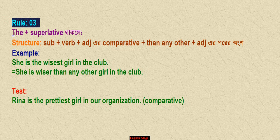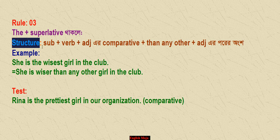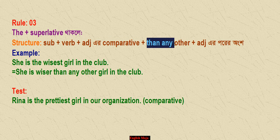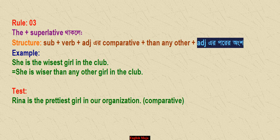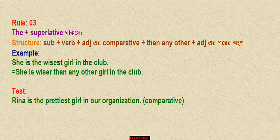This is Rule 3. Rule 3 is the ten-plus superlative. And if you would have a simple superlative, the comparative form can be followed. Let's see what we have done here. This is a superlative degree or a simple superlative — 'the widest.' This is a simple superlative.